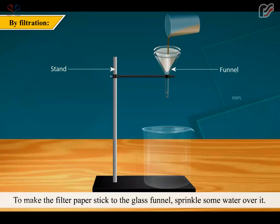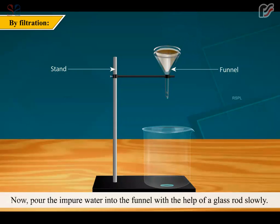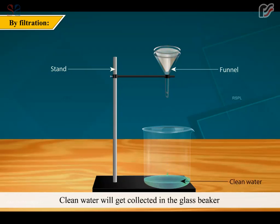Now, pour the impure water into the funnel with the help of a glass rod slowly. Clean water will get collected in the glass beaker and impurities will be left behind on the filter paper.